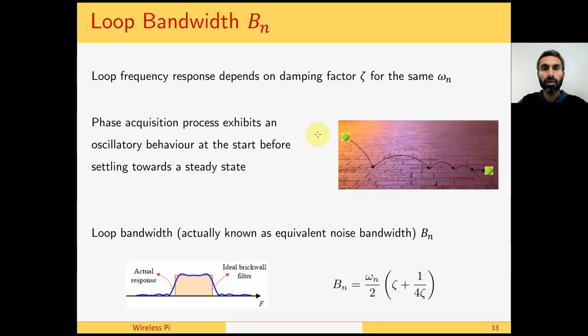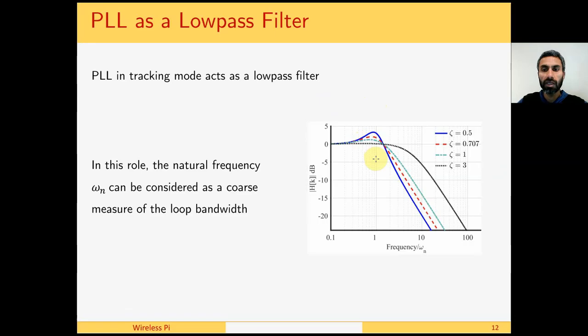Now a better definition of a loop bandwidth is needed because we can see here that for the same omega_n, the loop response also depends on the damping factor zeta.